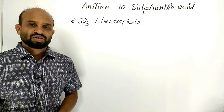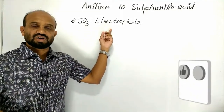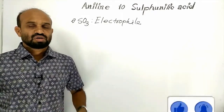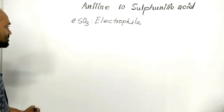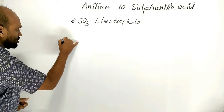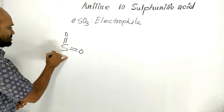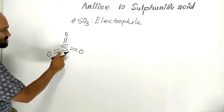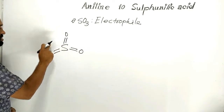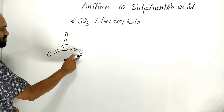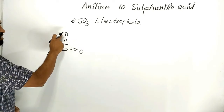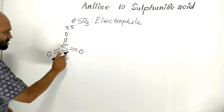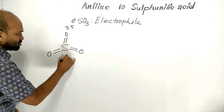The very first point is sulfur trioxide acts as an electrophile, though it is a neutral compound. Let's see why it is an electrophile. The structural formula of sulfur trioxide shows that sulfur is linked up with three highly electronegative oxygen atoms. The electronegativity of oxygen is 3.5 but the electronegativity of sulfur is 2.5.